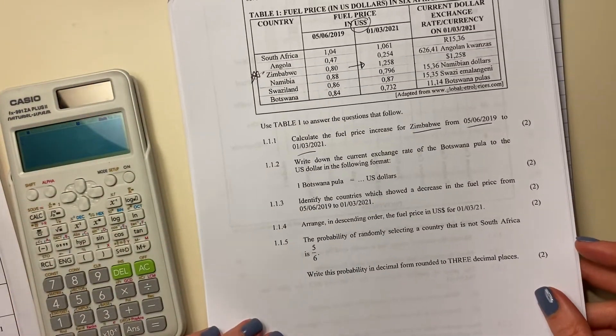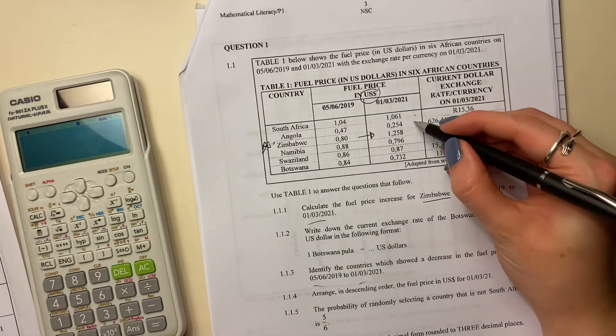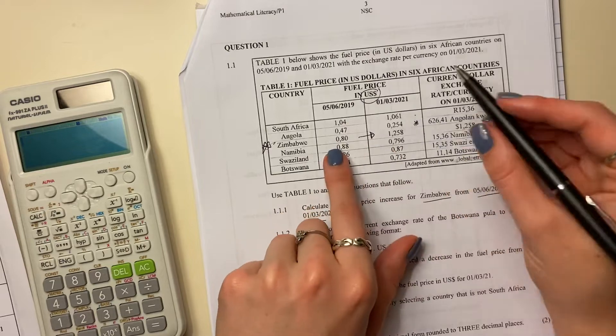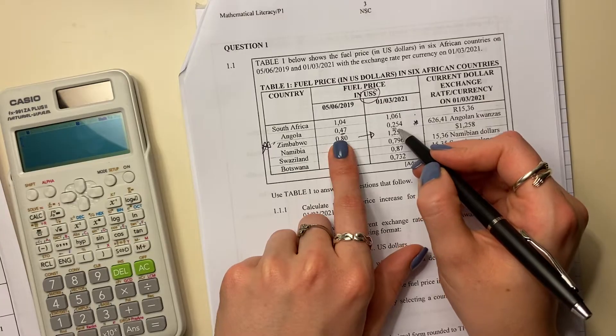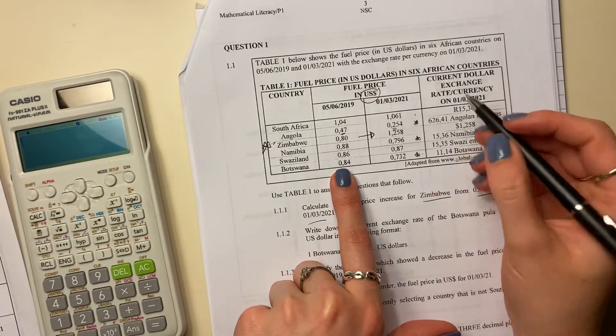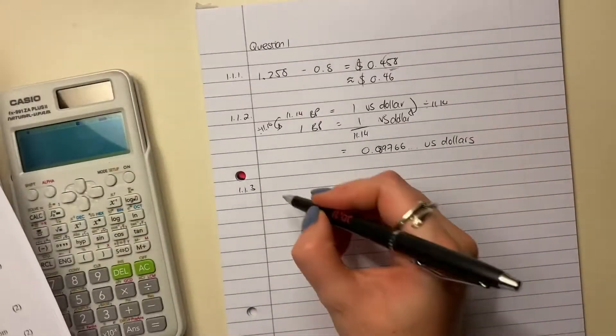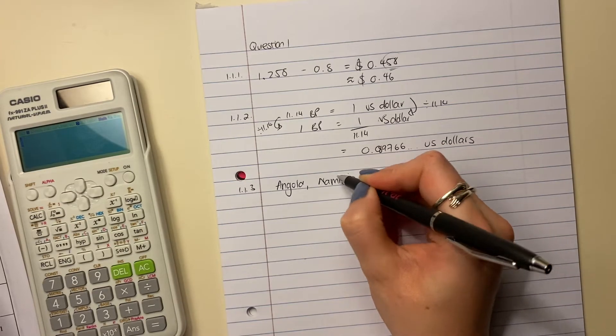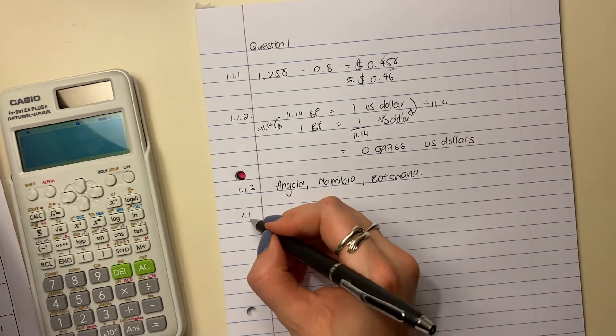Identify the countries which showed a decrease in the fuel price from this date to this date. So which one showed a decrease? That one went up. That one went down. Now you could be saying, oh, but that looks bigger because it's three more decimals. Remember, what are we comparing here? These two decimals to those two decimals. Which one's bigger? 47 is greater than 25. Therefore, this one went down. Same thing over here. Went down. Over there. Went down. So it's actually three countries. So we're going to say Angola, Namibia, and Botswana. Remember to write correctly. Angola, Namibia, and Botswana. Making good headway here.